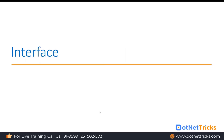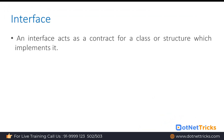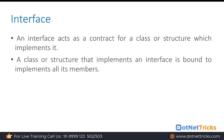Interface in C#: An interface acts as a contract for a class or a structure which is going to implement it. Interface never acts as a parent class the way an abstract class does. Interface always acts as a contract — whenever a class or structure implements an interface, it must implement all the members specified in the interface, just like a contract between two parties that both must follow.